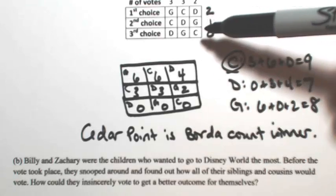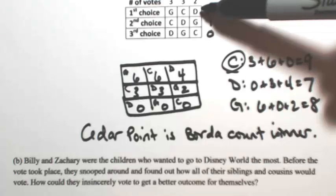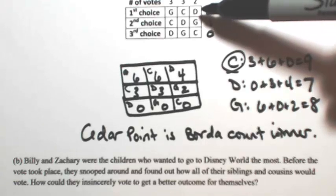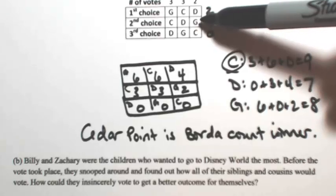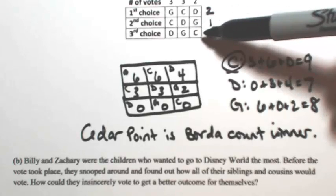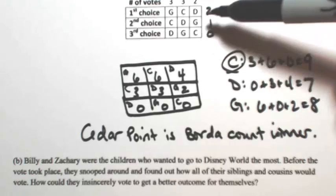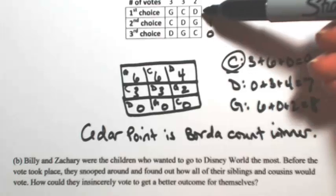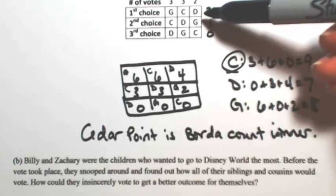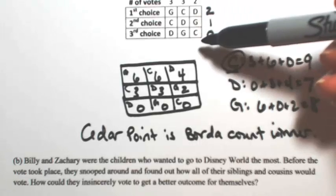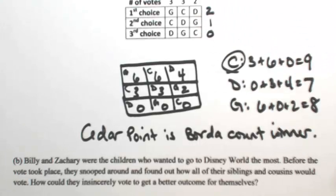Let's see how they can change their vote. We can't move Disney World up any higher because it's already as high as it can go, but Great Wolf Lodge needs to move up. You certainly don't want to move Cedar Point up any higher because then you're giving it more votes. So we'll switch around Disney World and Great Wolf Lodge to give G more votes and still keep C low.